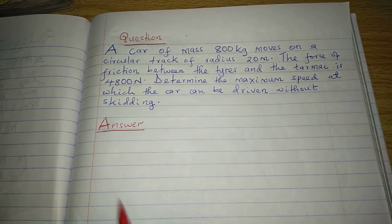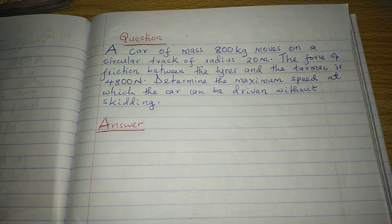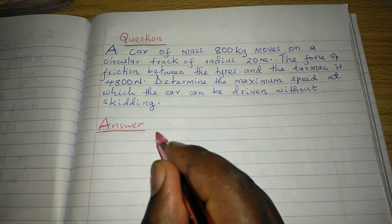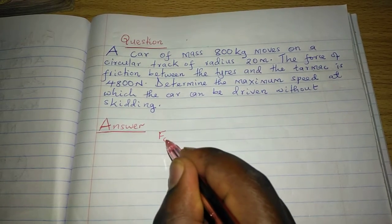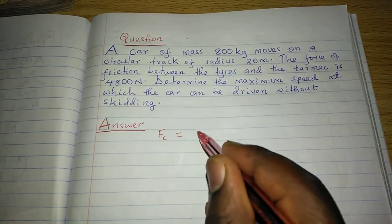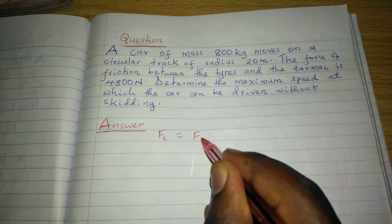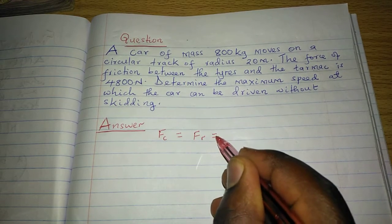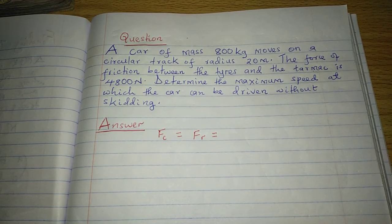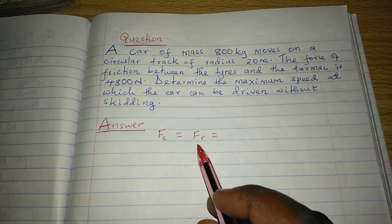Therefore, we know that on a tarmac or on any circular path, the centripetal force is provided by the friction between the tires and the tarmac. So this means the frictional force which gives us the centripetal force will be given by the general formula.